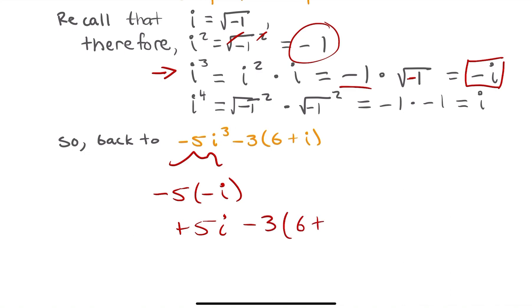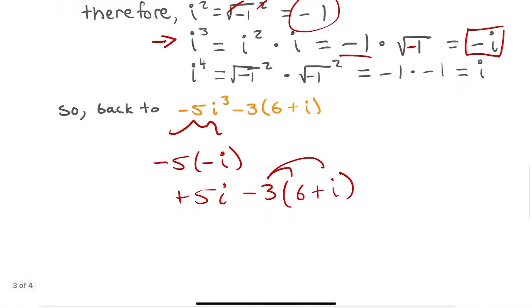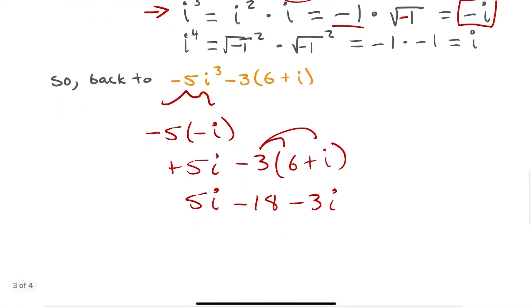Now let's consider the rest of this expression that we have here. 3 times the quantity 6 plus i. Now, of course, here with this 3, we're going to have to exercise the distributive property of multiplication over addition. So I'm going to distribute a negative 3 actually onto both the 6 and the i. And I'm going to keep my 5i, my positive 5i. And I'm going to be left over here on the right side with negative 18 because negative 3 times 6 is negative 18. And then negative 3i. So again, just the positive i times the negative 3 gives me negative 3i. At this point, all I have to do is combine like terms.